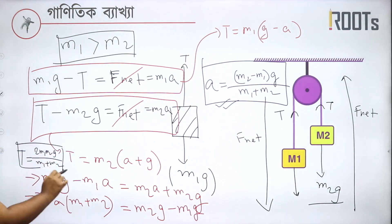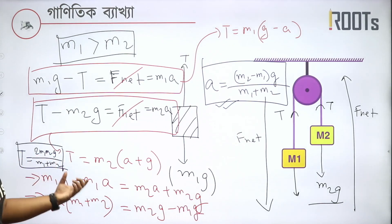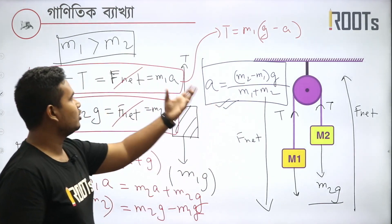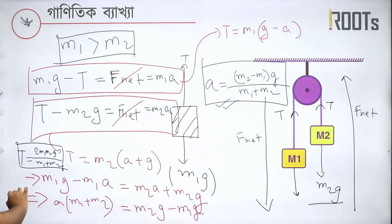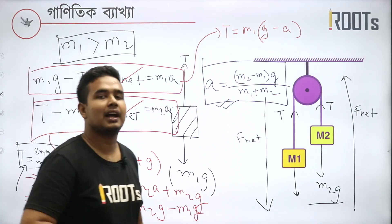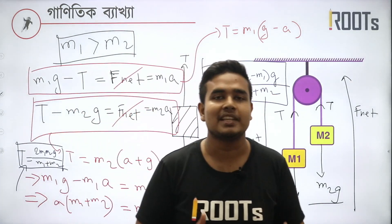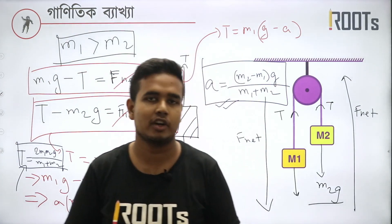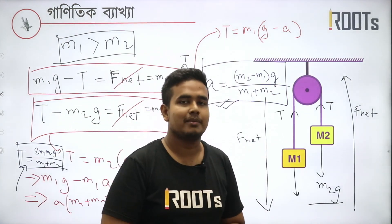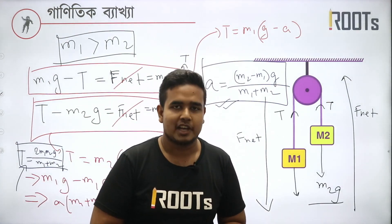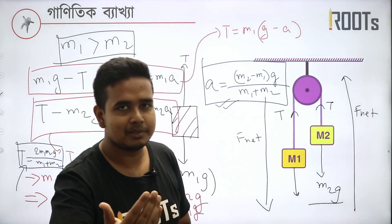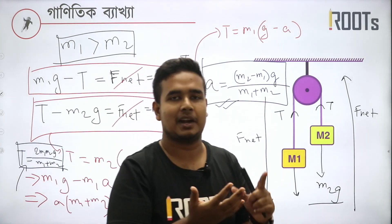If we say that T equals 2·M1·M2·g divided by (M1 plus M2), this is the tension value. If you have a homework, you can do this. The T value is the connection to the tension. If you have solved the problem, you can share it in the comment box. You can find us on Facebook and the YouTube channel.